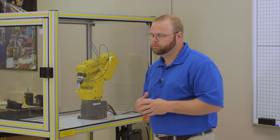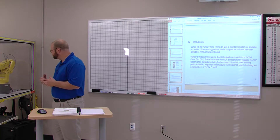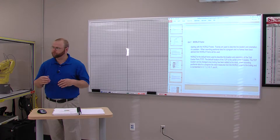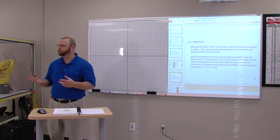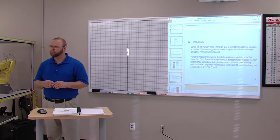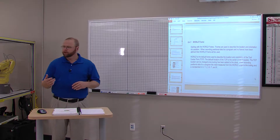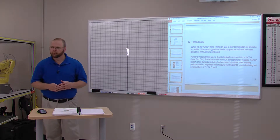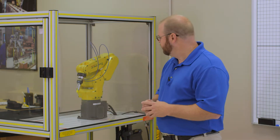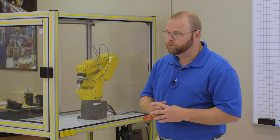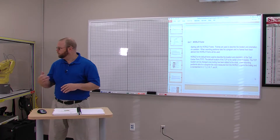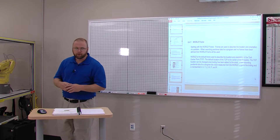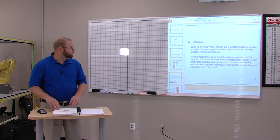We're going to establish a new tool center point. Currently our tool center point is at the end of the robot's face plate, but we've got a gripper on the end with a little pointer in it. We want our new tool center point to be at the very tip of that pointer, so we'll go through the procedures and steps to define that tool center point. That tool center point will be in relation to the face plate, which is in relation to the robot's world origin frame.